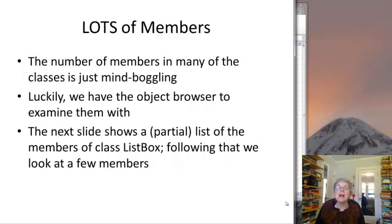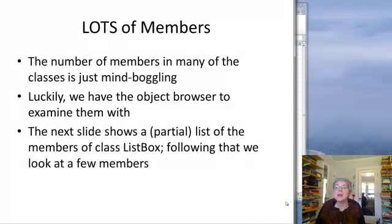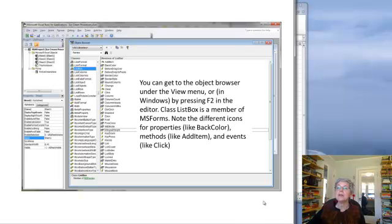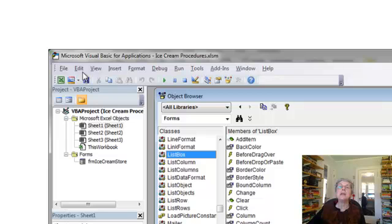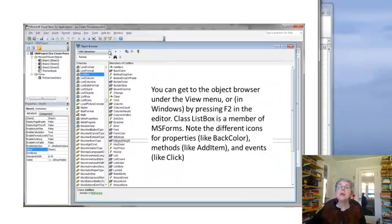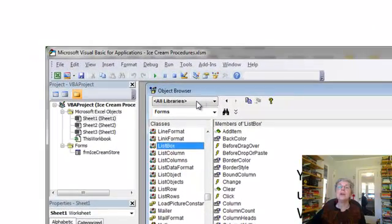An object can have lots of members — sometimes it's just mind-boggling — so nobody tries to remember all the members and what they're called and how they work. Instead you need an easy place to look them up, and that's what the object browser is. I decided to illustrate this with a class we're familiar with, which is ListBox. Here you can see I'm in the object browser, which I got to by using the View menu. You can do that in both Mac and Windows versions, and in the Windows version you can also use the F2 key.